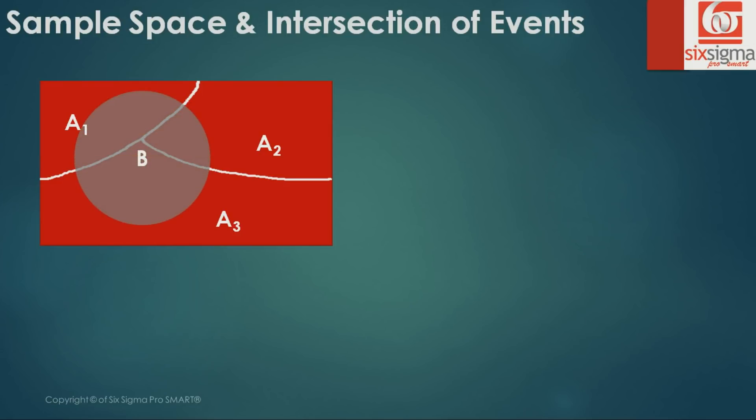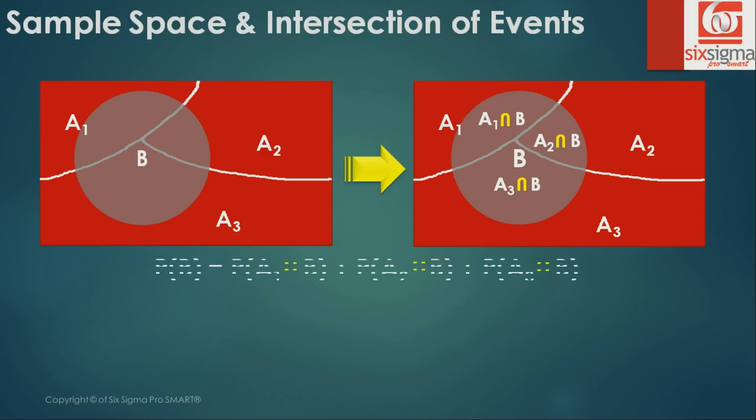Now let's say there's another event B that occurs. B has something in common with A1, A2, and A3. The portion of B common with A1 is A1 intersection B, the portion common with A2 is A2 intersection B, and the portion common with A3 is A3 intersection B. If we add all these common portions, we arrive at B. So probability of B is probability of A1 intersection B plus A2 intersection B plus A3 intersection B.